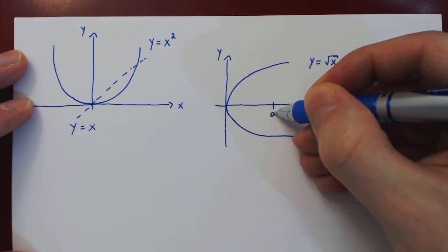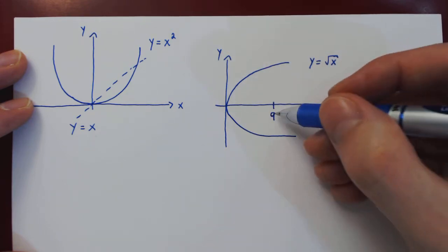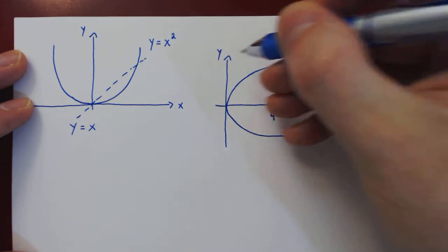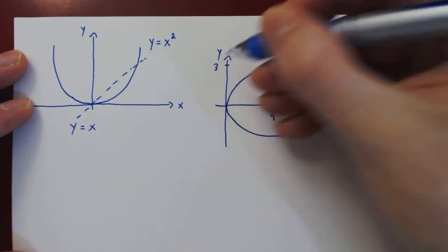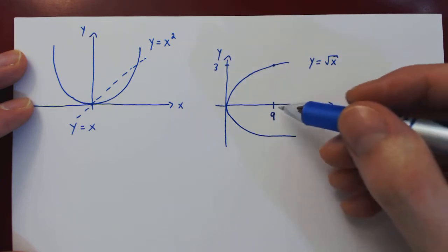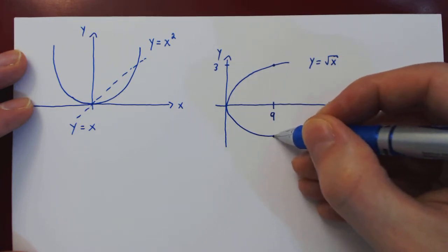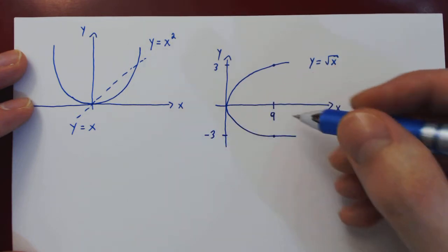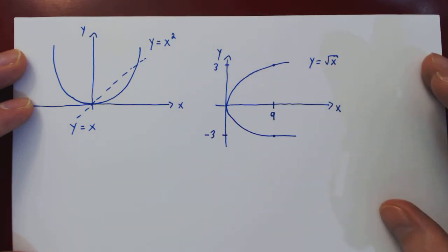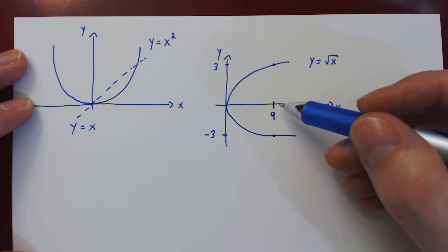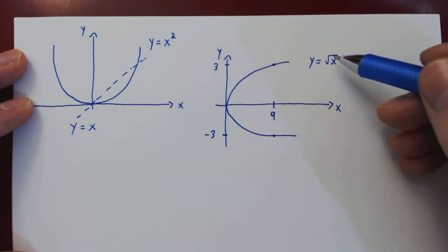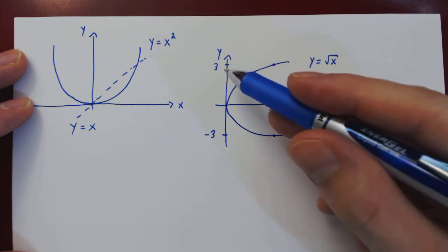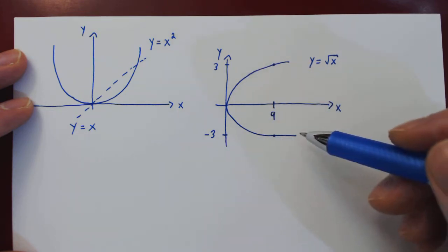Say we pick x equals 9. Then the square root of 9, algebraically, could be 3, since 3 squared is 9. But the square root of 9 could also be negative 3, since the square of negative 3 is also positive 9. So algebraically, for any positive x value, there are two distinct square root values: a positive solution and a negative solution.